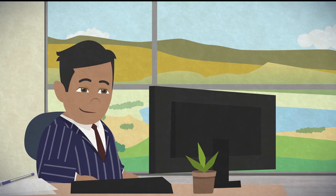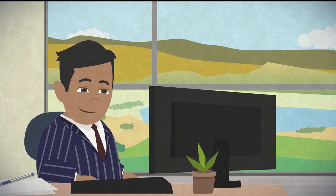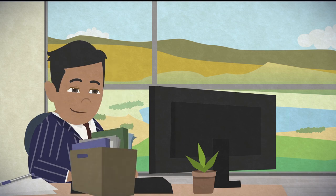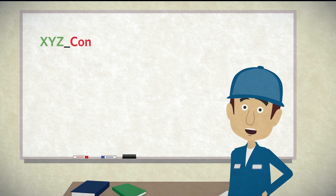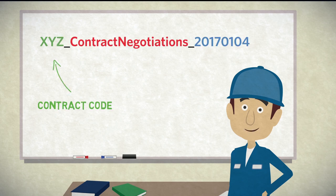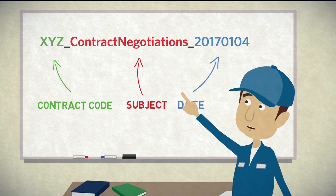Bosses are fond of saying things like, 'Give me everything on contract XYZ.' If the file name includes the contract code, finding the documents will be pretty simple. But usually folks want a specific document. 'Contract negotiations' is the subject of the document, so it should be added to the file name. Since there is a lot of back and forth on these negotiations, adding a date to the file name can also be useful. The file name consists of contract code, subject, and date.